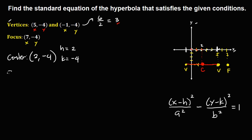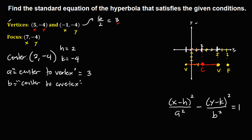To solve for a, since a is the distance from center to vertex, we count: 1, 2, 3, so a equals 3. For b, that is the center to co-vertex, but since there is no given co-vertex, we cannot solve b directly. We need to find c first, since c is the distance from center to focus. Counting from center to focus: 1, 2, 3, 4, 5, so c equals 5.